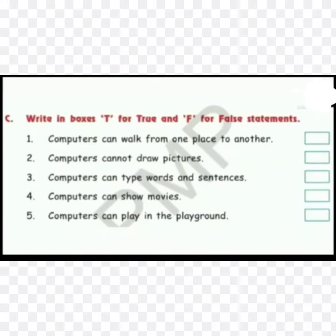C, write in boxes T for true and F for false statements. One, computer can walk from one place to another. Can it walk, children? Very good, no it cannot, so false. Two, computers cannot draw pictures. That is also false.